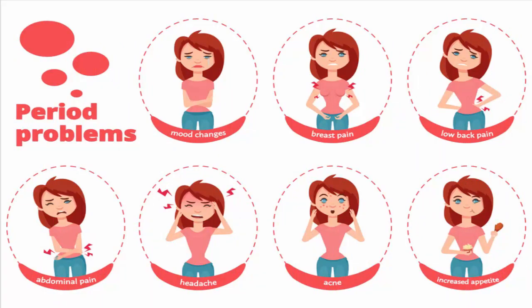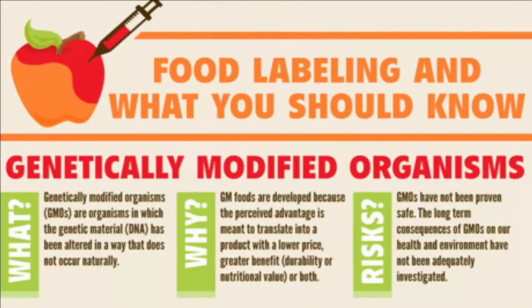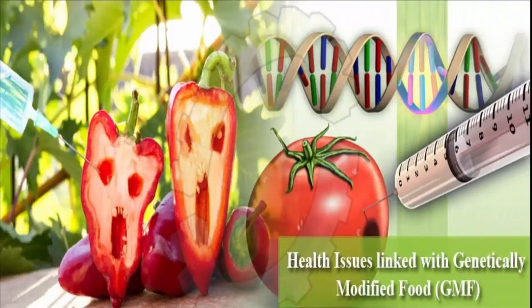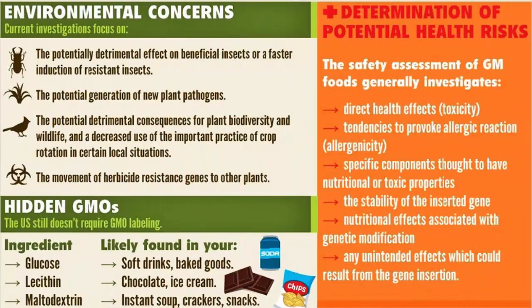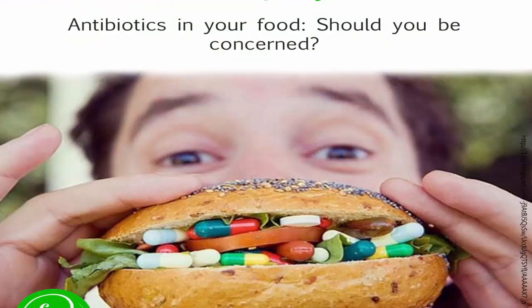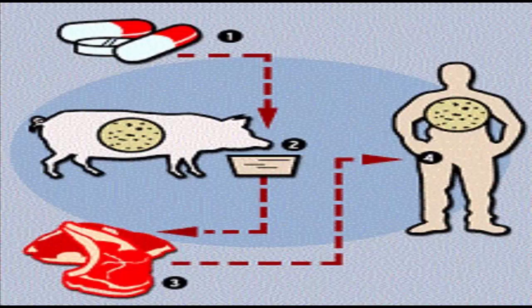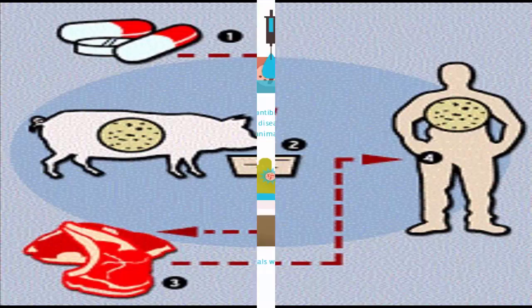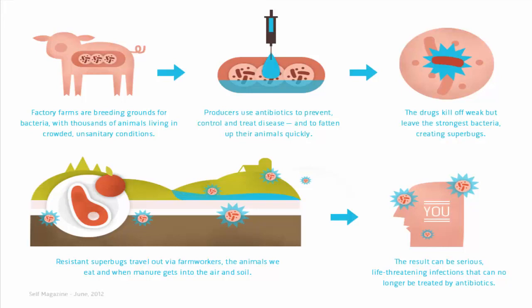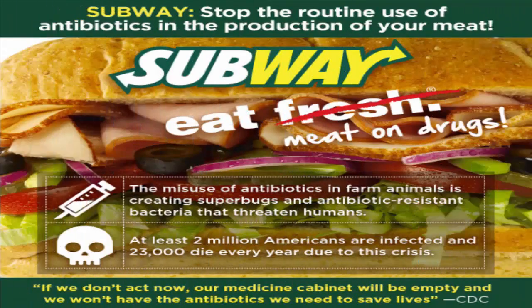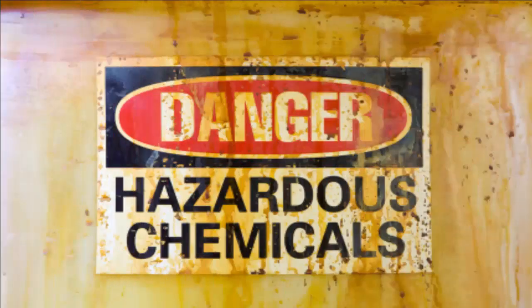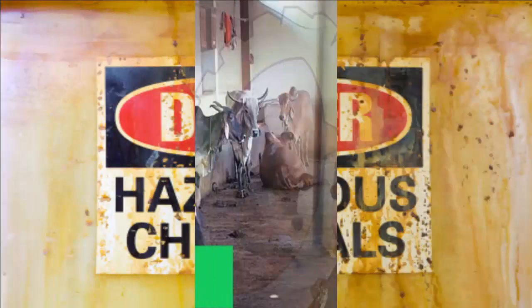The next concern is GM, i.e., genetic modification. Regularly consuming such food affects our genetics and can cause genetic health problems. Then there are antibiotics — as we all know, antibiotics create problems in our liver and kidney and significantly interrupt their function.